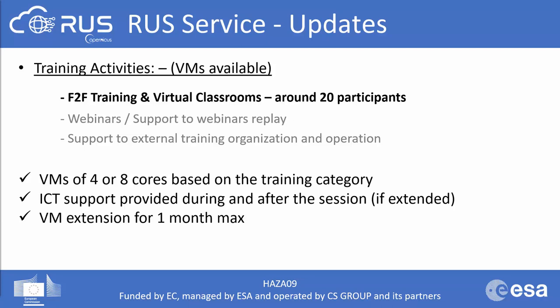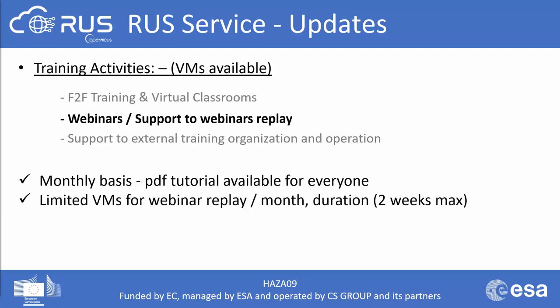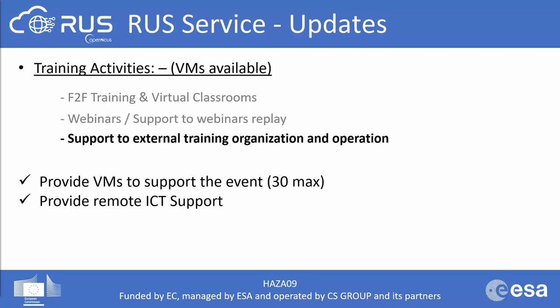For training activities, RUS virtual machines will still be provided. Each face-to-face event will have approximately 20 participants, each with a virtual machine to repeat exercises in real time. The VM type depends on the specific training needs, and VMs are available for one week with possible extension up to a month, with ICT and EOS expert support available throughout. Monthly webinar sessions and PDF tutorials will continue to be available via the RUS Copernicus and training portals. A limited number of VMs will be available for webinar replay for a maximum of two weeks, and support for externally organized trainings allows for a maximum of 30 VMs.